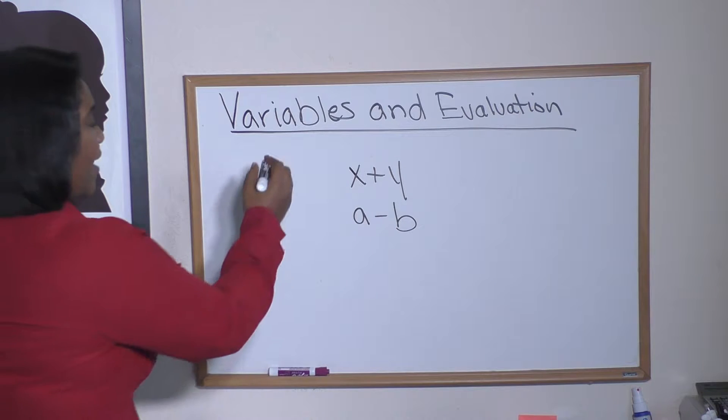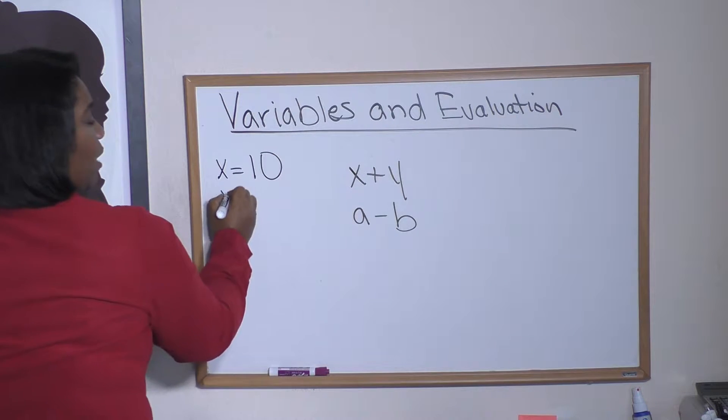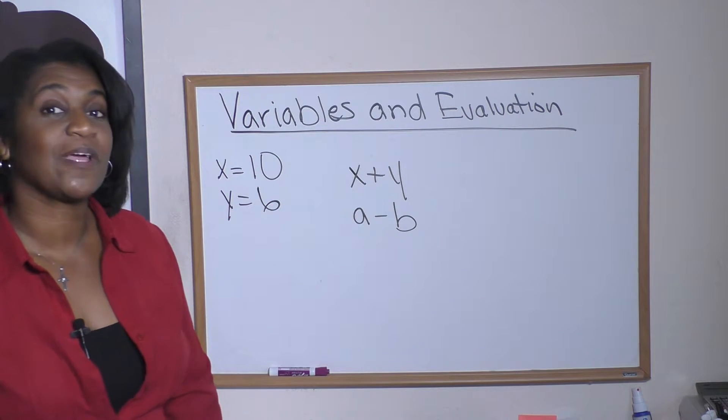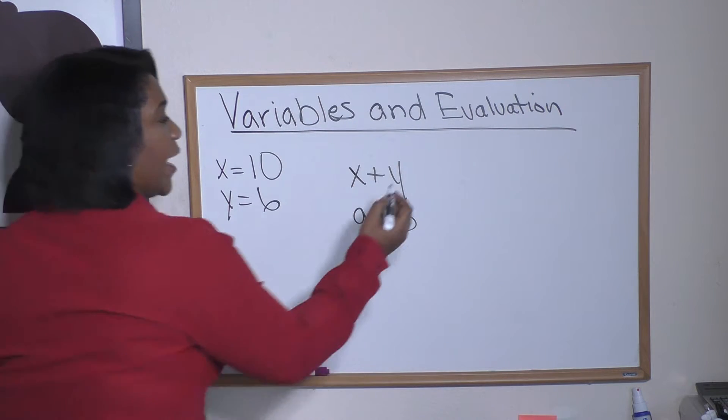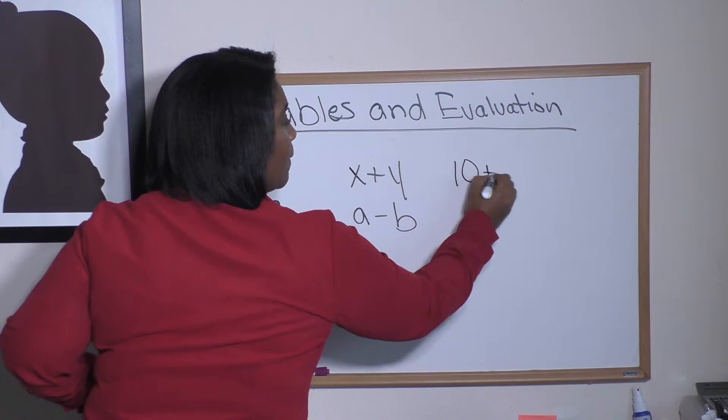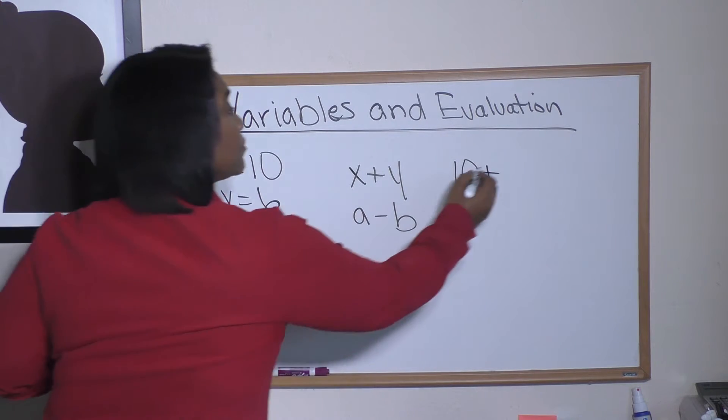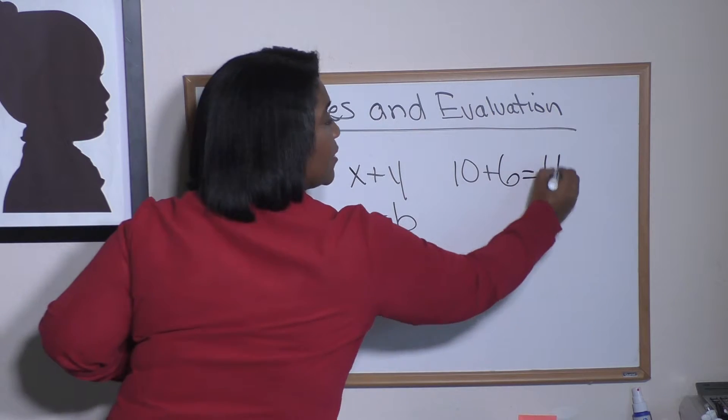So for example, if I said that X equals 10 and Y equals 6, and then I ask you to evaluate this expression, you would just simply plug in 10 for the X, so this would be 10 plus, and then you plug in 6 for the Y, and then you would do your addition: 10 plus 6 is 16.